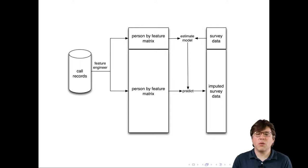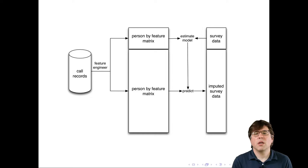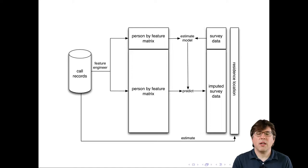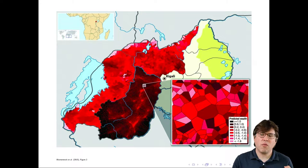Once they've built that model, they can use it to impute the survey responses for all the other customers. By giving a survey to about a thousand people and combining it with the call records, they're able to impute or guess the survey answers for the other 1.499 million people. They also were able to infer everyone's residential location — roughly by looking at where they made their phone calls at night.